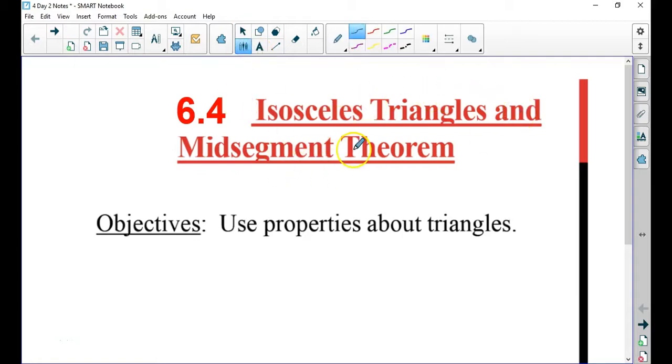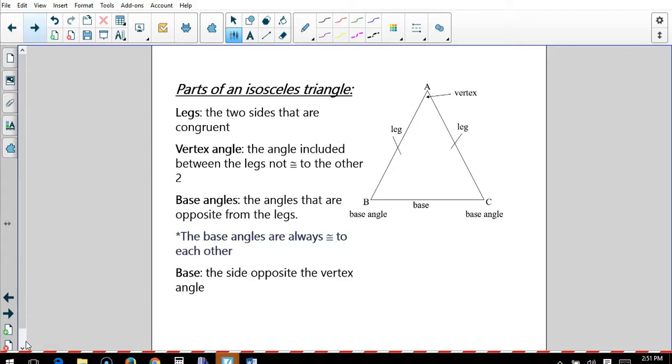6.4 isosceles triangles and the mid-segment theorem. So one of the key things here is remember what an isosceles triangle is and it has two matching legs. An isosceles triangle has two legs in the same measurement. One leg, two legs.